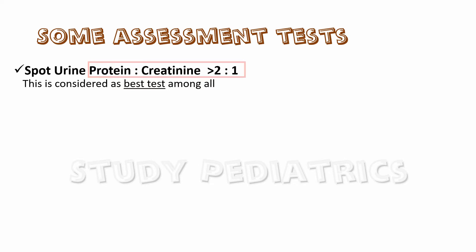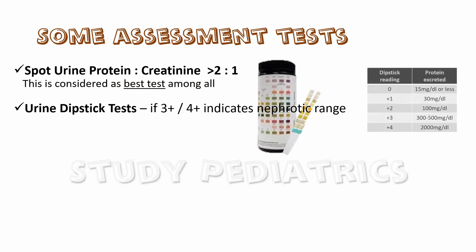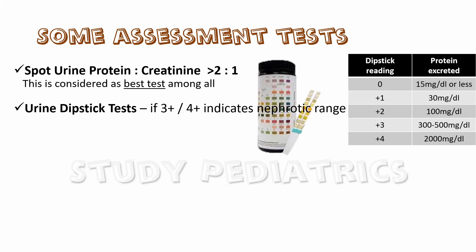The routine test of kidney function is the urine dipstick test, which has a strip with a color-changing chemical sensitive to protein levels in urine. A result of plus 3 or plus 4 indicates that urine may have protein content more than 350 mg per dL, or if we consider a day's sample of 1 to 1.5 liters, it comes out to be 3.5 grams or above — hence crossing the nephrotic range.